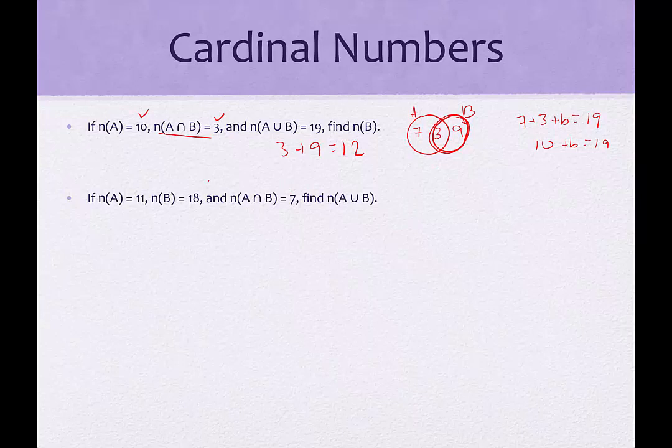In our next example, the cardinal number of set A is 11, the cardinal number of set B is 18, and the intersection has a cardinality of 7. What is the union? We're going to start this one by setting up our two sets, set A and set B, and we always plug in the intersection first. The intersection is 7, so we're going to put a 7 right here in that intersection. Now the cardinal number of set A is 11, but we already have 7 elements counted for, which means over here we're going to put 4, right? So that way the two regions add up to 11.